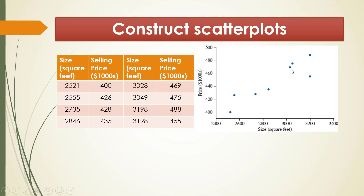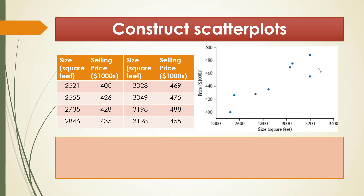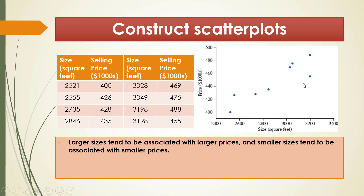Similarly we get 8 points on this coordinate system. That's how we construct the scatter plot — this is the scatter plot of the selling price of these eight houses. We see that the larger size here tends to be associated with the larger prices. For example, when the size of the house is larger, the selling price is higher. That's why we see that larger size tends to be associated with larger prices, and the smaller size tends to be associated with the smaller prices.